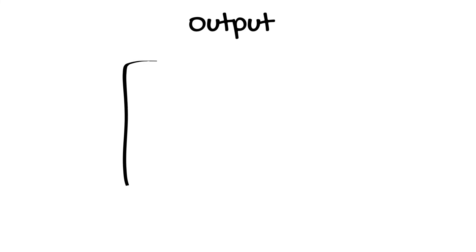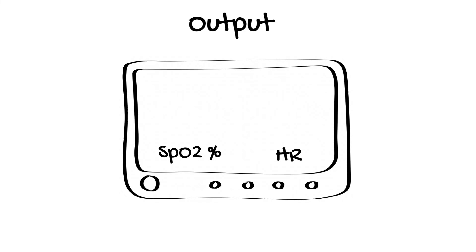The final component of the system is the output. This includes a numerical display, usually with the saturations and the heart rate, and on higher quality monitors a graph called a plethysmograph, which means a graph of the change in volume. This allows an assessment of the quality of the signal.